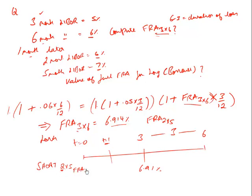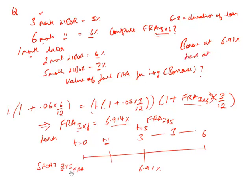Now I have shorted a similar agreement. When t=3 arrives, because of the long 3×6 FRA I will have to borrow at 6.91% — this is an obligation, it is a forward contract. But I also shorted a 2×5 FRA, so at t=3 I will also have to lend. I borrow at 6.91% and lend at whatever the new rate is. If that rate is higher than 6.91%, I have gained; if lower, I have lost. The value to the long is always exactly opposite to the value to the short.